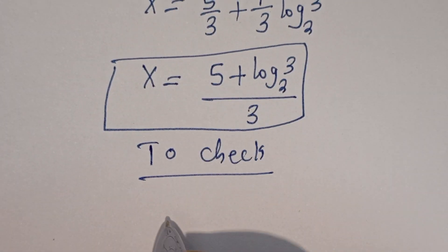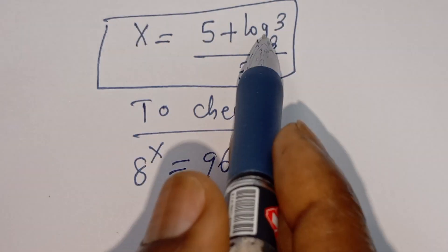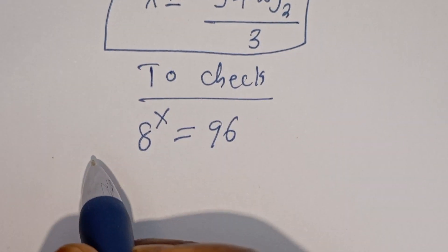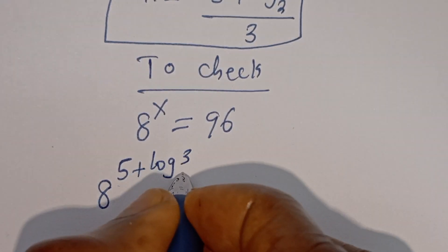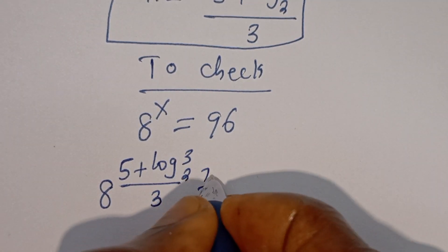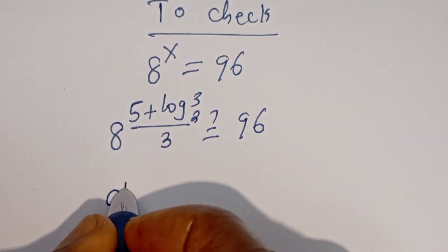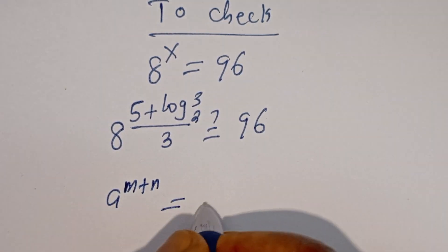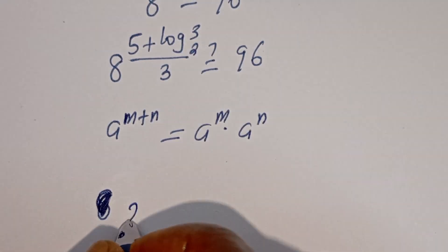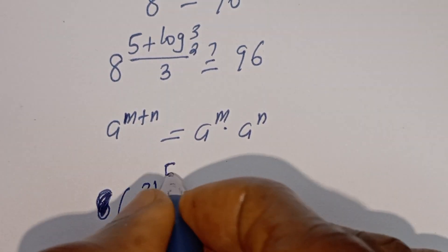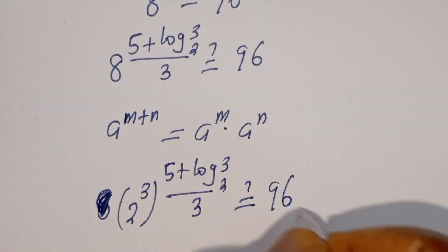Let's check to confirm if this answer is right. We have the given equation h to the power of s is equal to 96. When s is equal to 5 plus log 3 base 2, divided by 3, we have h to the power of that quantity must equal 96. Take note that if you have A to the power of M plus N, this is equal to A to the power of M multiplied by A to the power of N.